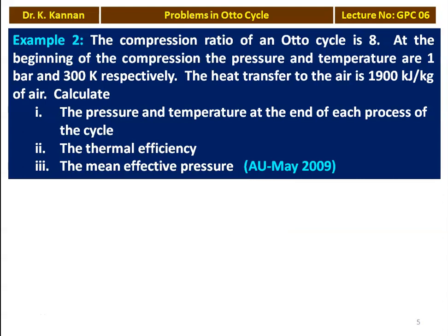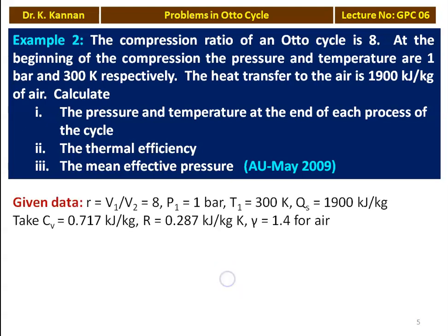The next question is from the May 2009 question paper. The compression ratio of an Otto cycle is 8. At the beginning of compression, the pressure and temperature are 1 bar and 300 Kelvin respectively. The heat transfer to the air is 1900 kJ/kg. Calculate: (1) pressure and temperature at the end of each process, (2) thermal efficiency, (3) mean effective pressure. Given data: R equals V1/V2 equals 8, P1 equals 1 bar, T1 equals 300 Kelvin, heat supplied equals 1900 kJ/kg.